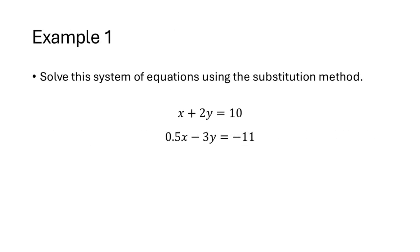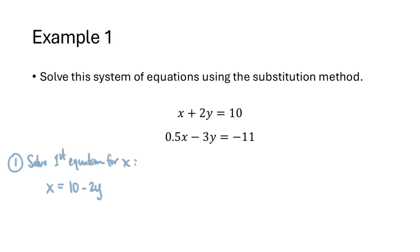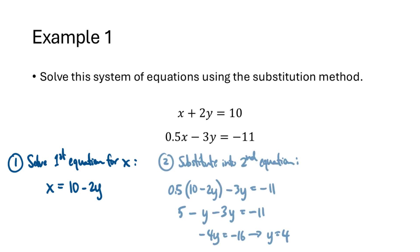To see this method in action, let's consider an example. We have a system of two equations and two variables. The first equation is x plus 2y equals 10, and the second equation is 0.5x minus 3y equals negative 11. Our process here would be to pick one equation and one variable and solve for that variable. The easiest way to go would be to solve the first equation for x.